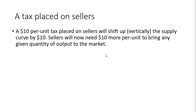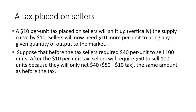Why do they need $10 more per unit? Because every time they sell a unit, the firm will have to send a $10 check to the government to pay the taxes. Suppose that before the tax, sellers required $40 per unit to sell 100 units of output. After the $10 per unit tax, sellers will now require $50 from buyers to sell 100 units, because they will only net $40 — they get $50 from the buyer minus the $10 tax, leaving them in a situation no different than before the tax.